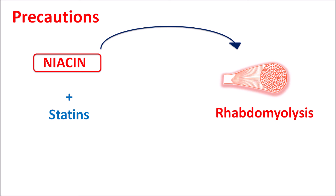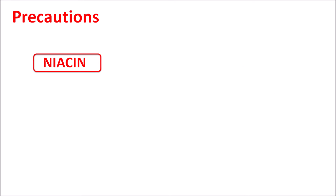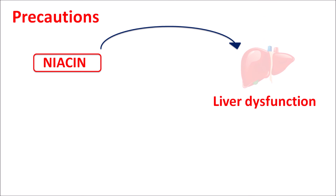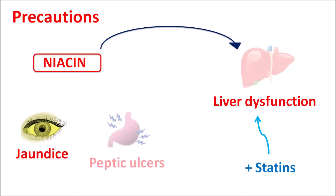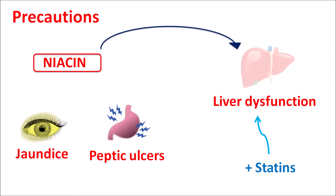The side effect of rhabdomyolysis is further enhanced by niacin. Symptoms such as muscle weakness and fatigue should be thoroughly checked to avoid its development. Niacin can also increase liver dysfunction, particularly when combined with statins, which also cause liver dysfunction. In patients with symptoms of jaundice or peptic ulcers, this drug should be given carefully, as these conditions can further worsen liver function.